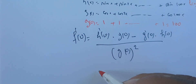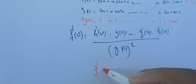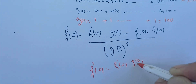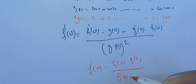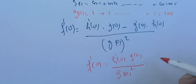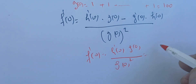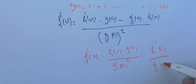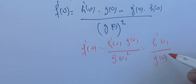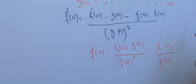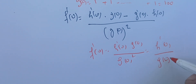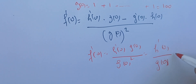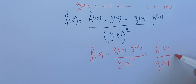Since H(0) = 0, the term G prime of 0 times H(0) drops out. So f prime of 0 simplifies to H prime of 0 times G(0) over G(0) squared, which equals H prime of 0 over G(0).